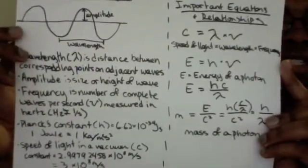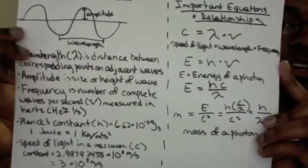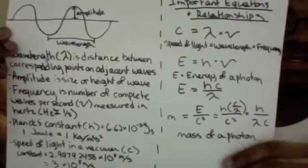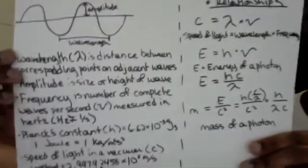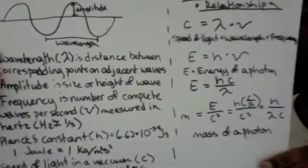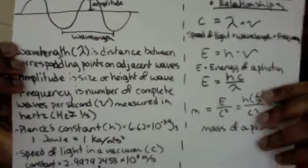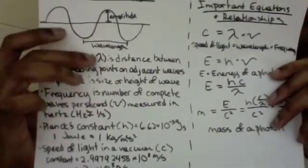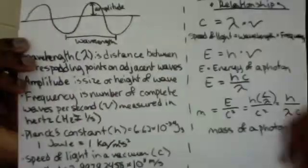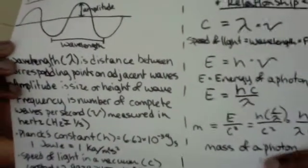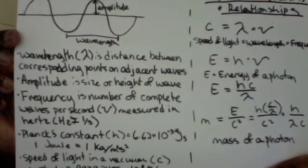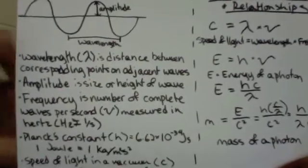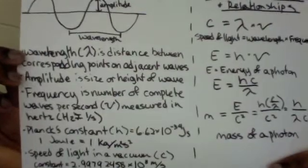Up here we have what a light wave actually looks like, the wavelength and the amplitude and different components of a light wave. So the wavelength, signified by this Greek letter of the alphabet, is the distance between corresponding points on adjacent waves. The amplitude is the size or height of the wave. The frequency is the number of complete waves per second, signified by this V. It's measured in Hertz, and Hertz is one per second.